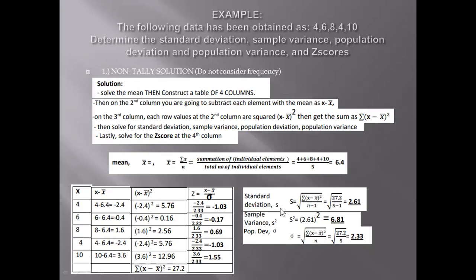To solve for standard deviation S, take the square root of the summation of individual element minus mean, squared, all over n minus 1. The square root of 27.2 all over 5 minus 1 gives us 2.61. For sample variance, square the standard deviation: 2.61 squared gives us 6.81. For population variance, square the population deviation: 2.33 squared gives us 5.43.